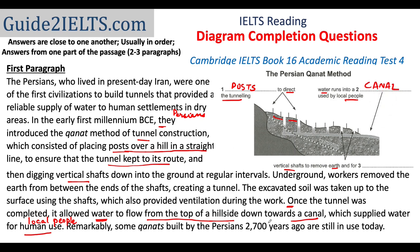The answer to the third question is 'ventilation,' which appears before the second answer in the passage. So the answers are not always in order, but they are very close to each other. It's always important to understand what is being said rather than just going in for certain keywords and looking for those words in the passage. For example, for the third question, vertical shafts are mentioned in one sentence, but the answer comes from another sentence which just mentions 'the shafts.' It requires that you understand what exactly is being said.